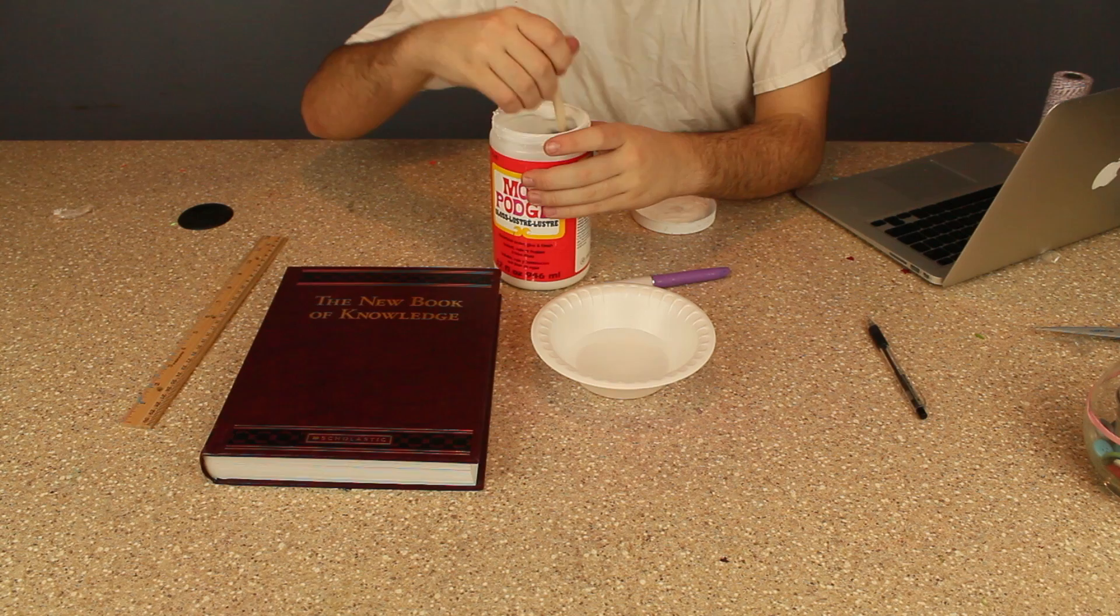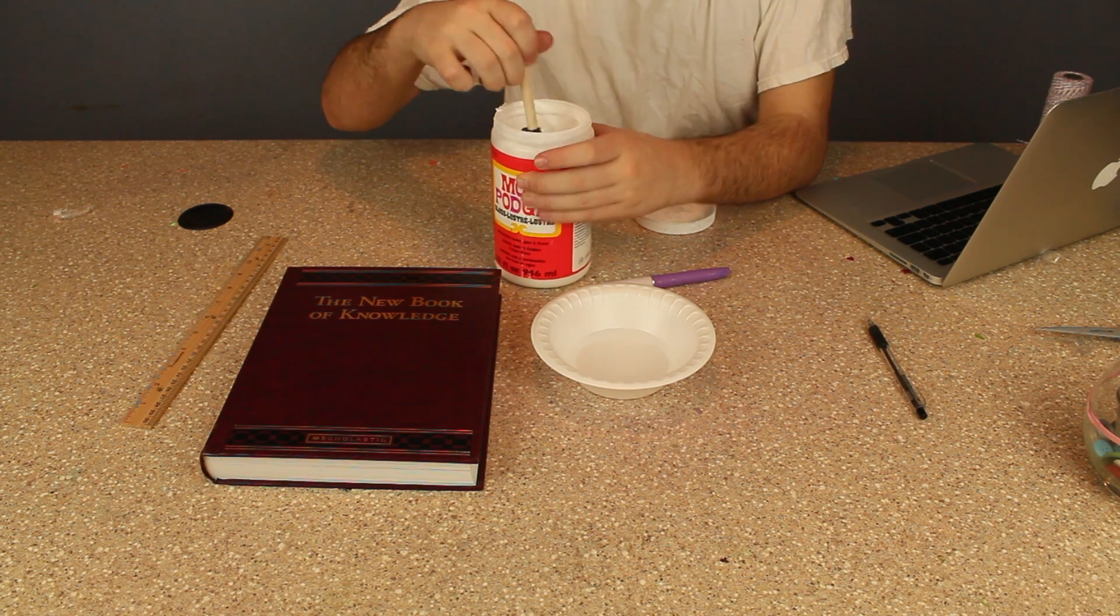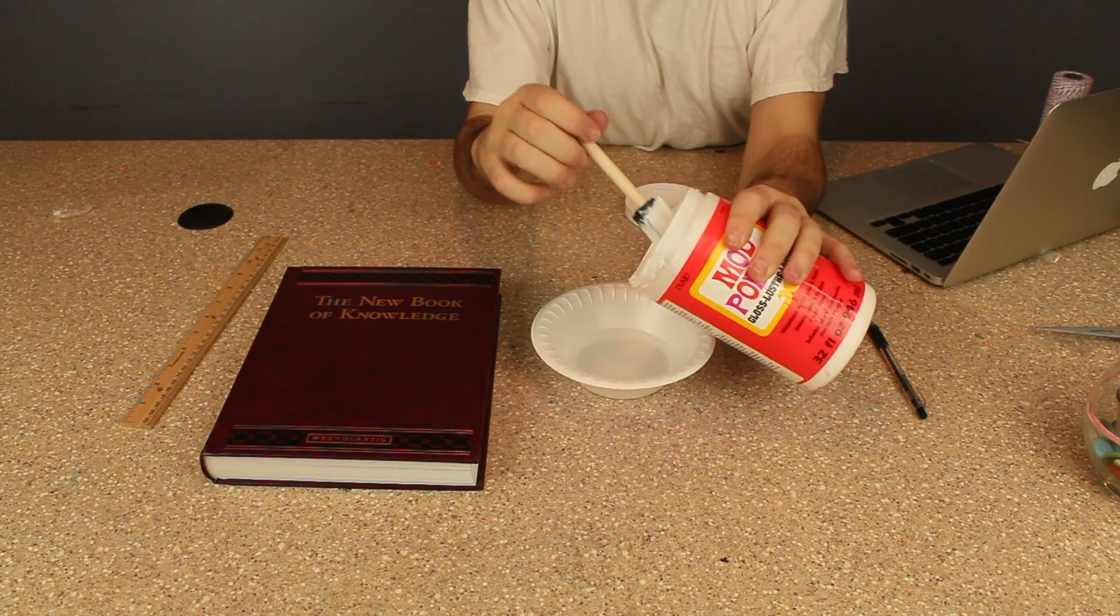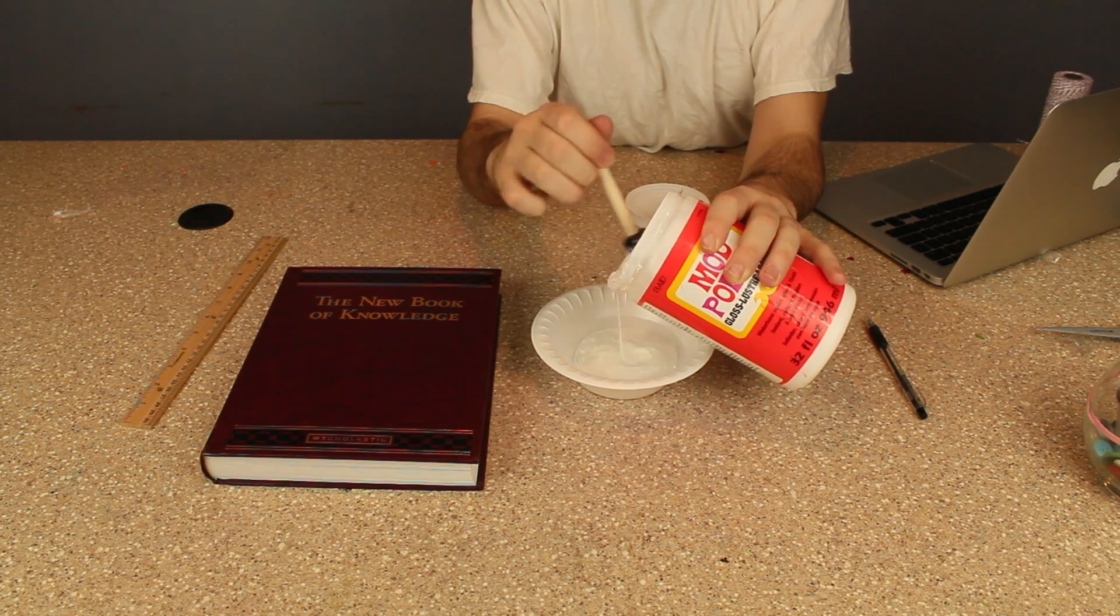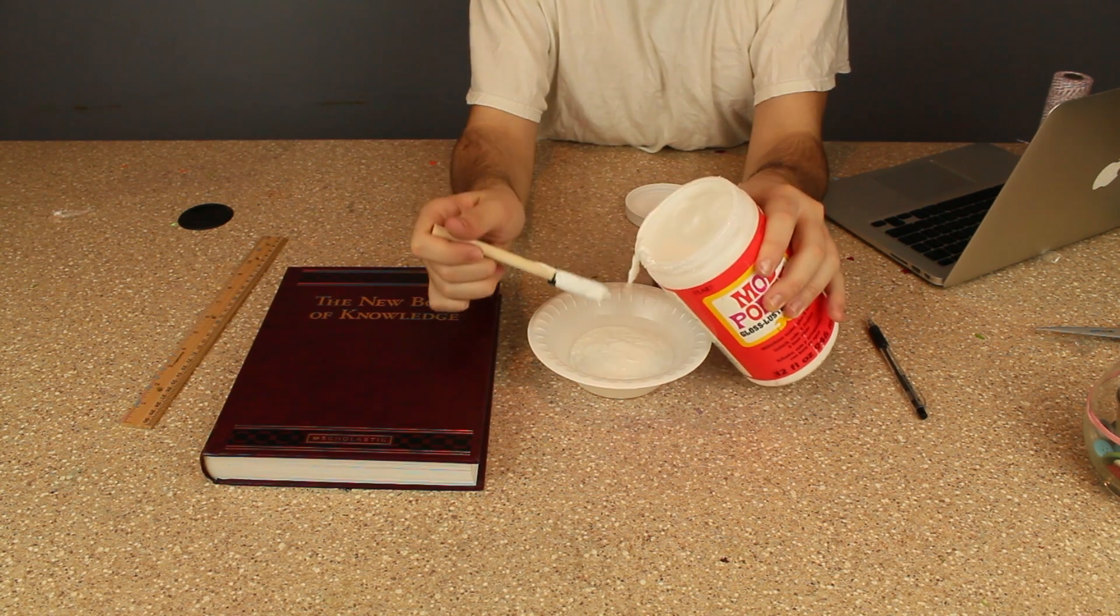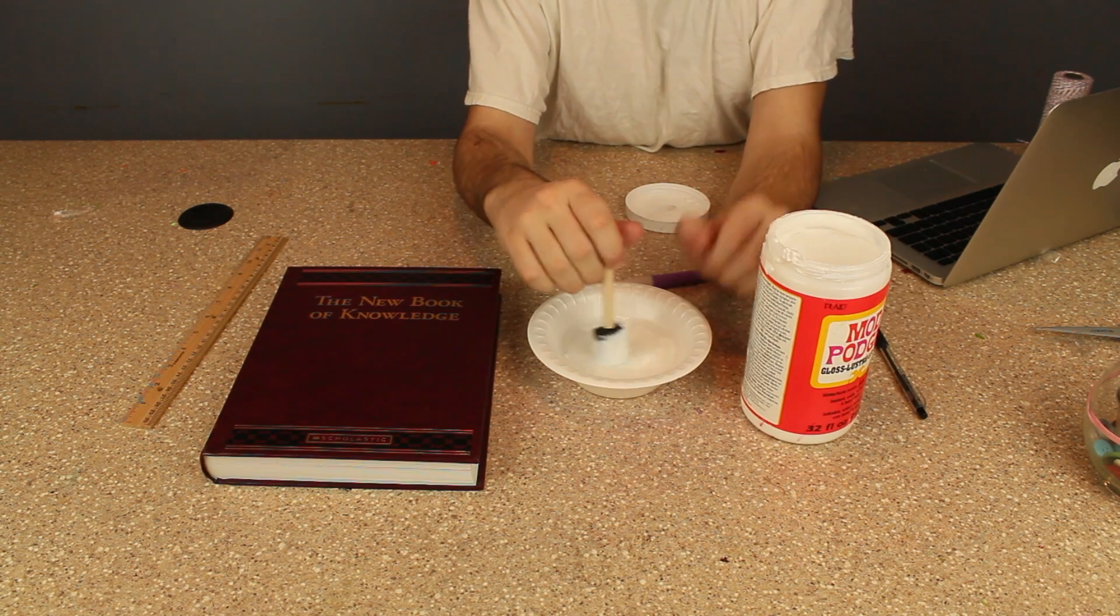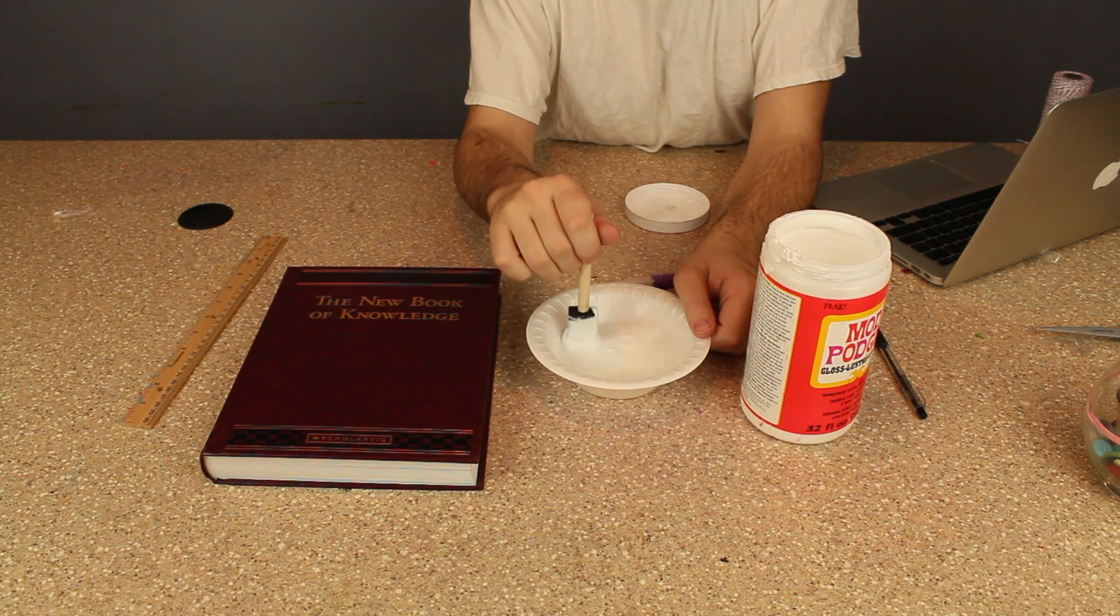First, you want to start taking your Mod Podge and give it a stir around if yours is sort of old like mine is, and pour it in the bowl of water. I'm watering down some Mod Podge. I do about 75% Mod Podge and 25% water.